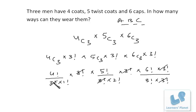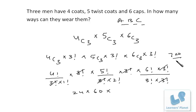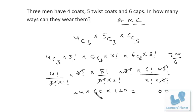Simplifying: 4C3 gives 4, multiplied by 3 factorial is 24. 5C3 gives 10, and 120 divided by 2 is 60. 6 factorial is 720, and 720 divided by 6 is 120. So the calculation gives us 24 into 60 into 120 — and we can express this as 12 cubed, which equals 1728. So the answer is 1728.